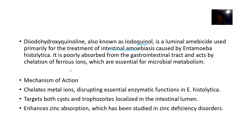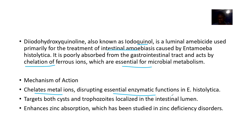It is poorly absorbed in the gastrointestinal tract, so it stays localized in the GI tract, helping to target Entamoeba histolytica. It works by chelation of iron ions, which are crucial for the organism's growth. The mechanism of action involves chelating metal ions and disrupting essential enzymatic functions in Entamoeba histolytica. It targets both the cyst and trophozoite stages.